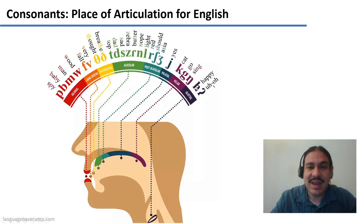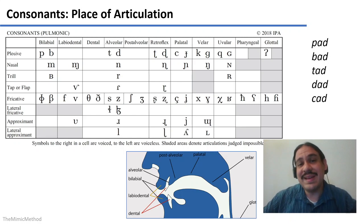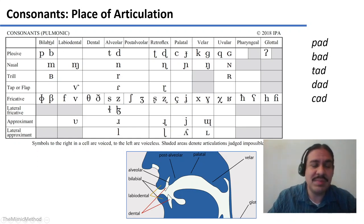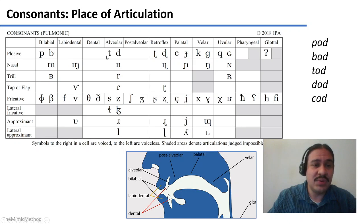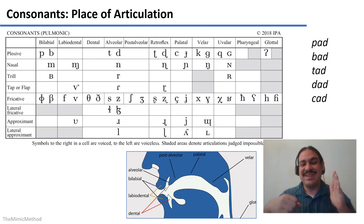English also has glottal sounds like the H in 'happy' and the glottal stop in the middle of 'oh.' This table is part of the International Phonetic Alphabet, used to describe the different sounds of spoken languages. On the columns we have places of articulation: bilabial for P, B, M; labiodental for F; alveolar for T, N, R, S. Not all T's are alveolar — Spanish has dental T's, where the tongue contacts the back of your teeth rather than the alveolar bridge.